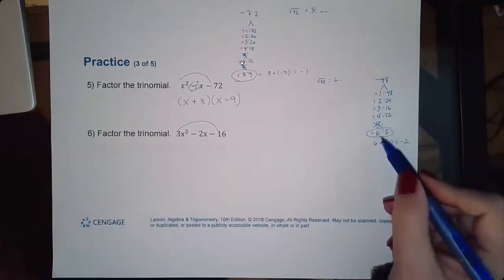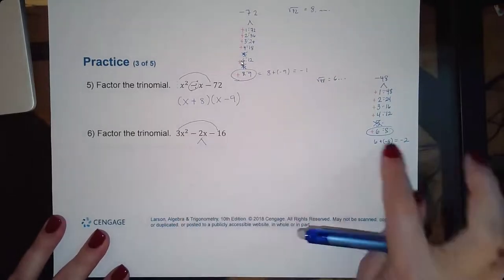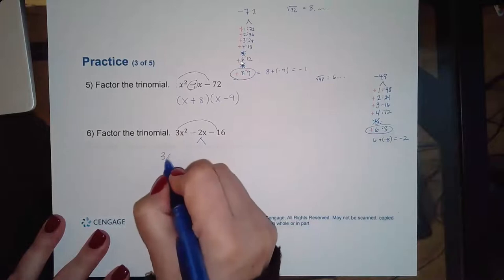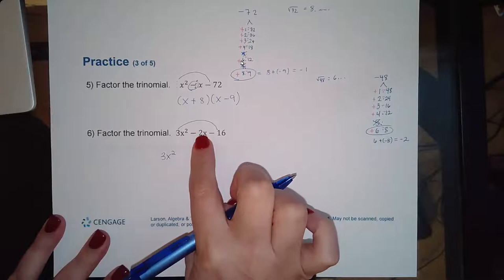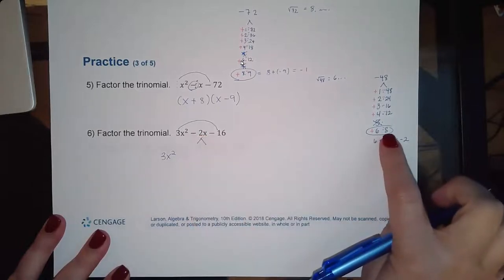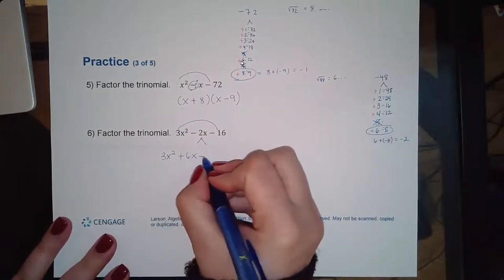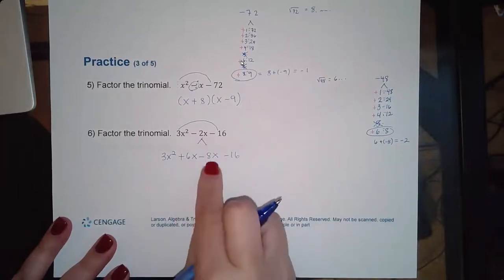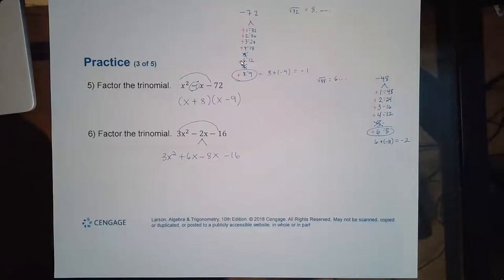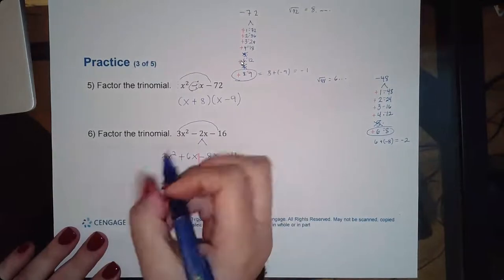Six plus negative eight gives me negative two — that's the pair. Remember, once we find that set of numbers, we don't just write x plus six and x minus eight. We have to split the middle term using these two numbers. Since that term has a variable, those numbers also have to carry that same variable, so this becomes positive six x minus eight x.